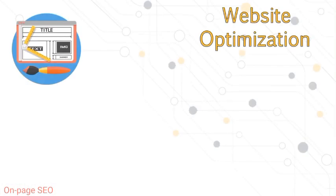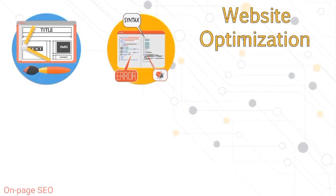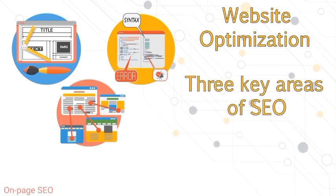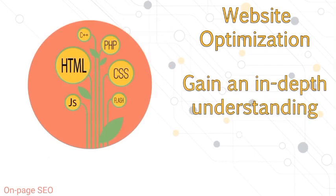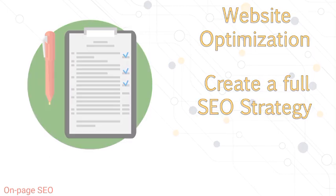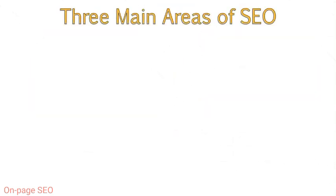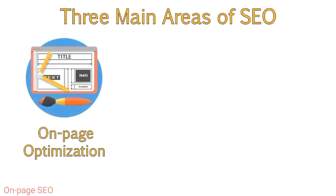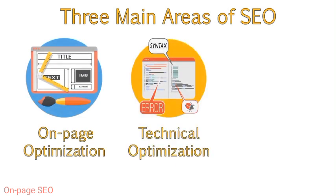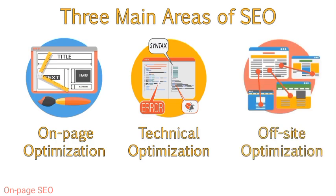The optimization of a website is divided into three key areas, which we will cover over the next few lessons and modules. This will allow you to gain an in-depth understanding of the tactics needed to create a full SEO strategy. The three main areas you will hear about in the SEO world are on-page optimization, technical optimization, also referred to as on-site optimization, and off-page or off-site optimization.